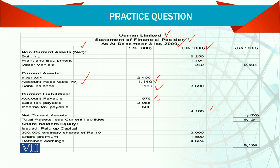Then we have net current assets, followed by total assets less current liabilities. The format here is slightly changed. Instead of putting all assets together and then liabilities and equity together, what we did is: show non-current assets first, then take current assets minus current liabilities to show the working capital.